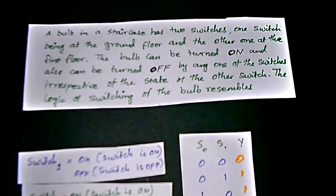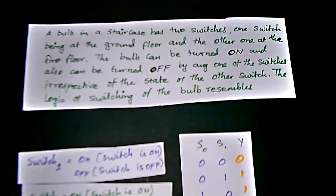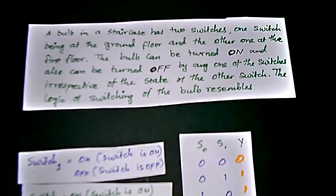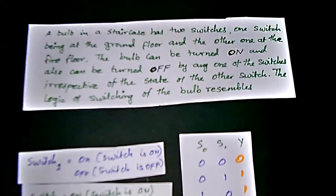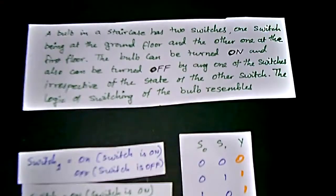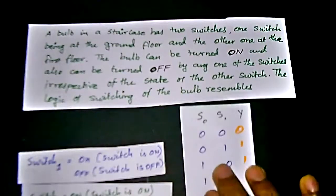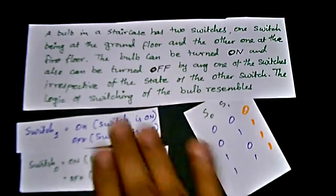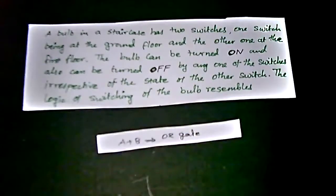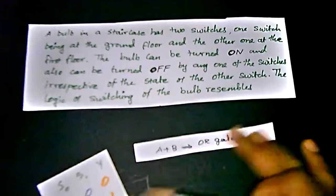So this configuration resembles an OR gate. The function is A plus B (A + B), which is the OR gate logic. This arrangement — with the first floor switch, second floor switch, and the lamp output — gives us the OR gate function, as seen in the truth table.